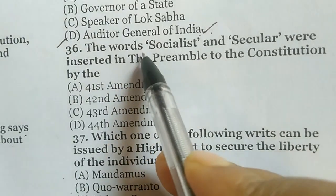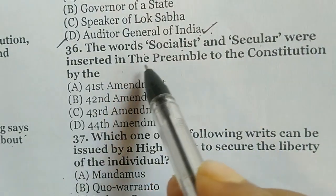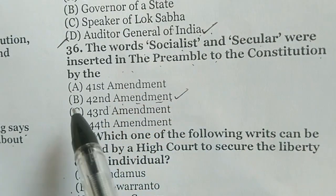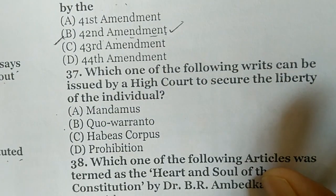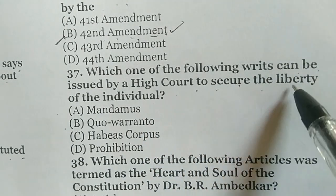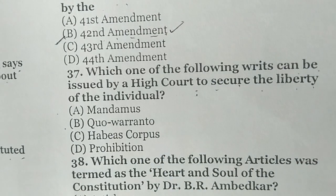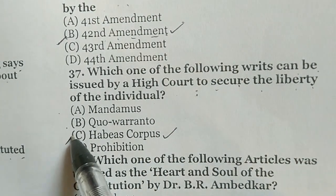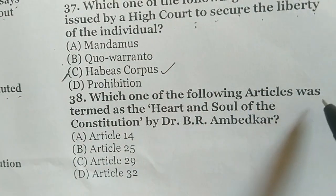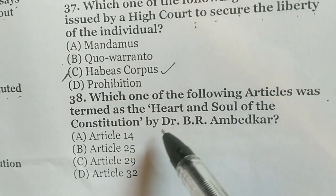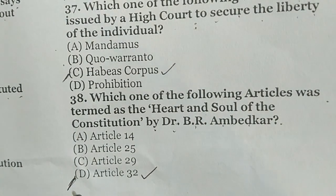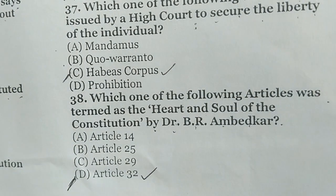The words 'socialist' and 'secular' were inserted in the Preamble to the Constitution by the 42nd Amendment — option B. Which writ can be issued by a High Court to secure the liberty of an individual? The correct answer is Habeas Corpus — option C. Which article was termed the 'heart and soul of the Constitution' by Dr. B.R. Ambedkar? The correct answer is Article 32 — option D. Thank you for watching the video.